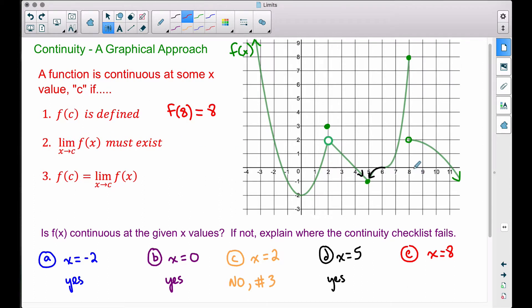So since the number 2 piece, the limit does not exist, we say the function is not continuous at that particular x value. So therefore, we will say no, the function is not continuous, and it fails because of condition number 2, because the limit does not exist.